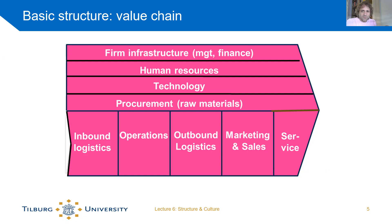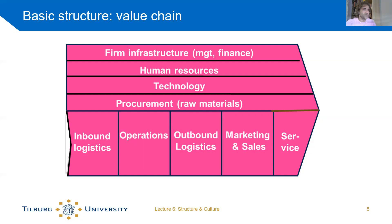This basic value chain is from the 1950s or 60s. It describes the basic process of an organization from inbound logistics all the way to service. On top of that are the supporting functions — the other things you need as an organization to make sure the primary process can happen. The primary process consists of inbound logistics, operations where the actual work happens, outbound logistics, marketing and sales, and after-sales service.